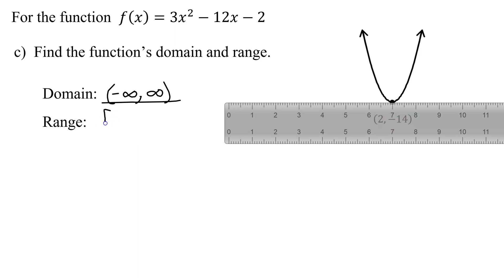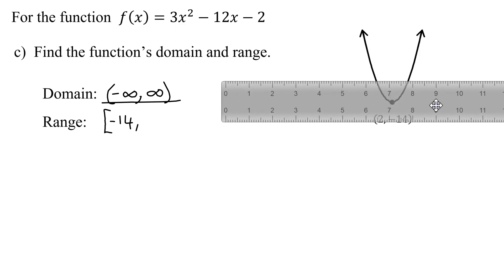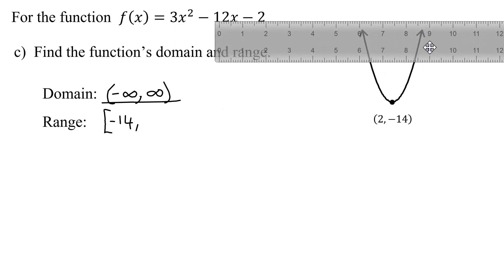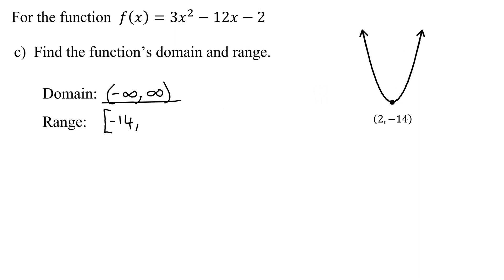So my range is going to start at negative 14. Since there's an actual point where y equals negative 14, I put square brackets on it. And then how far does the range go? It keeps going up and there's nothing stopping it going all the way up. So it will go to positive infinity, which you have to put a parentheses on. So here is the range for this function.